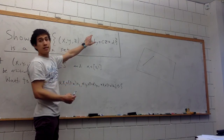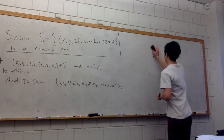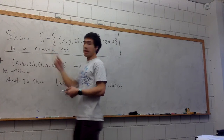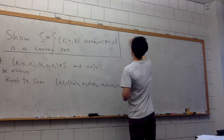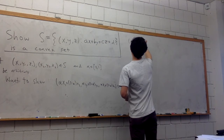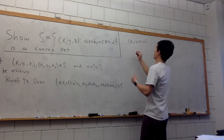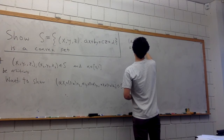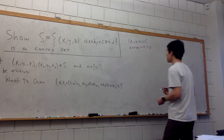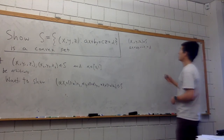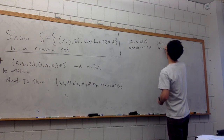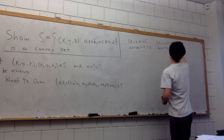We need to show that this triple satisfies the plane equation. To do that, let's use the fact that both points are in S. Since (x1, y1, z1) is in S, by the definition of S: a*x1 + b*y1 + c*z1 = d. And since (x2, y2, z2) is also in S, we have: a*x2 + b*y2 + c*z2 = d.